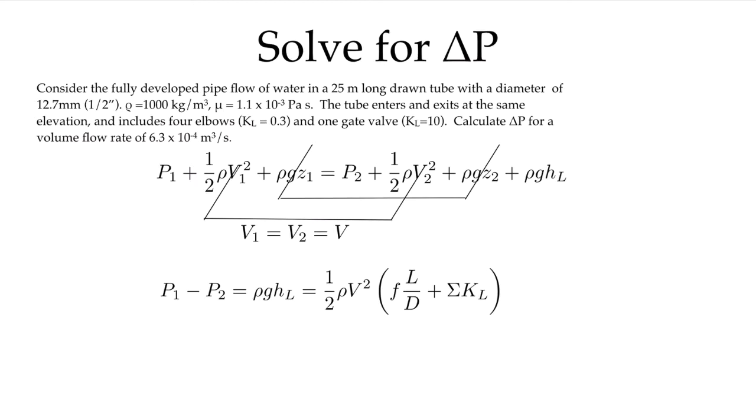Just to get a feel for what this piping system looks like, we're entering and exiting at the same point. So perhaps we start at point 1, we come across an elbow, we go up, we hit another elbow here, we hit a gate valve, come across, hit another elbow, come down, another elbow and carry on.